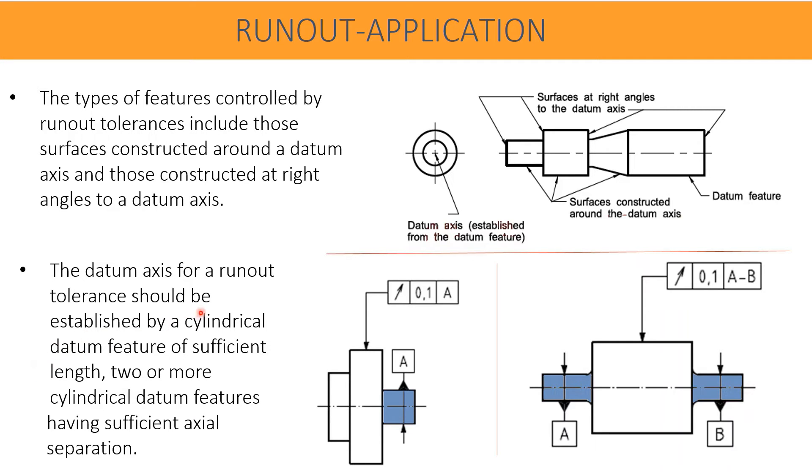The datum axis for a runout tolerance should be established by a cylindrical datum feature. The runout datum always needs an axis of sufficient length. There should not be a very short length cylinder where we cannot establish a good measurable, reliable, consistent axis of the cylinder. Two or more cylindrical datum features having sufficient axial separation can be used.